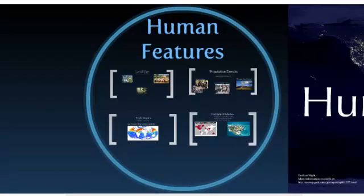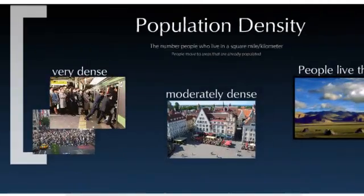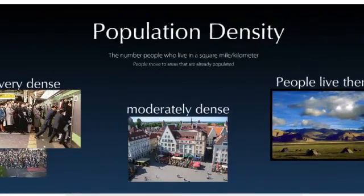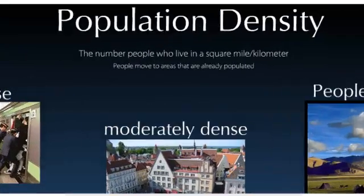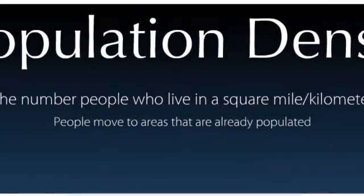We're going to examine just the human features right now. Population density is one thing that people consider when they're going to live in an area. Population density is the number of people who live in a square mile or kilometer.